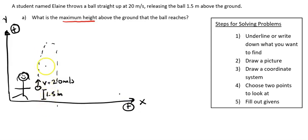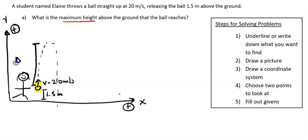In this problem it is just an up and down problem, so we're just going to be looking at the y direction, and upwards is positive. Now I need to choose two points to look at — points where I know some information or want to find some information. I know information right here at 20 meters per second — that's where I'm starting. I want to find the max height, so this is going to be my ending point right here.